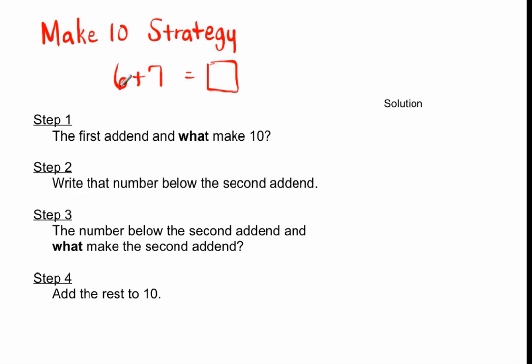The first step in using this strategy is to know all the numbers that go with numbers 1 through 9 that make 10. So 6 and 4 make 10. Step 1: Ask yourself, 6 and what make 10? The answer is 4.